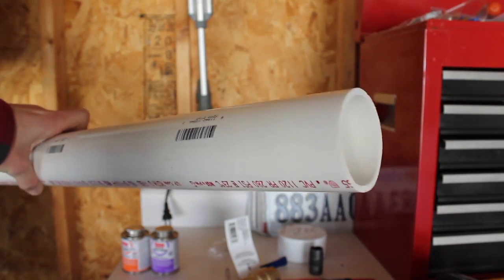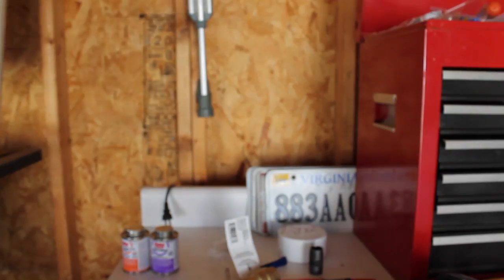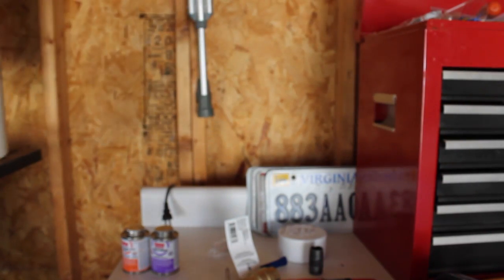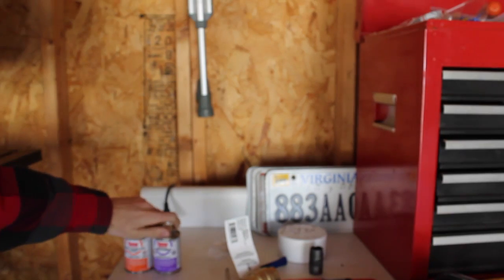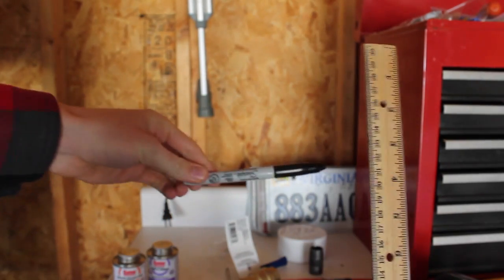You will need 2 feet of 2 inch PVC pipe schedule 40, a 3 to 2 inch T, 2 feet of 3 inch diameter PVC, PVC primer and cement, a ruler, and a Sharpie.